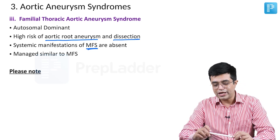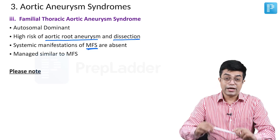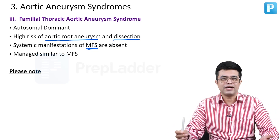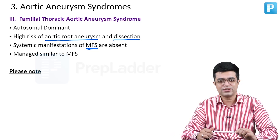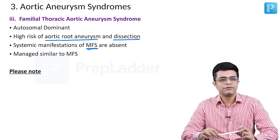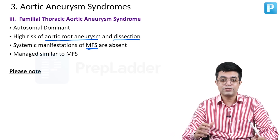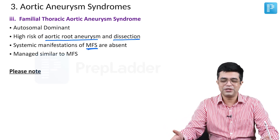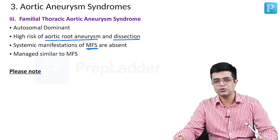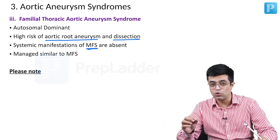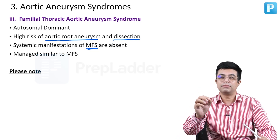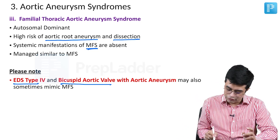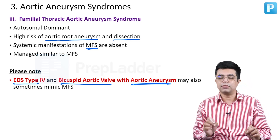There is an important point to remember. A classic quiz question asked which variety of Ehlers-Danlos syndrome tends to mimic Marfan syndrome clinically. The answer is EDS Type 4, which very rarely can mimic Marfan syndrome. Additionally, bicuspid aortic valve with aortic aneurysm may also sometimes mimic Marfan syndrome.